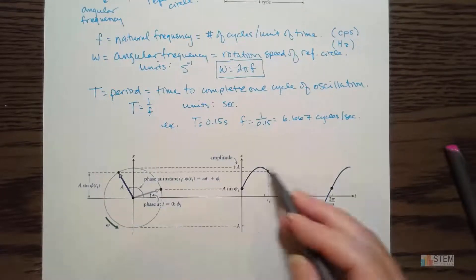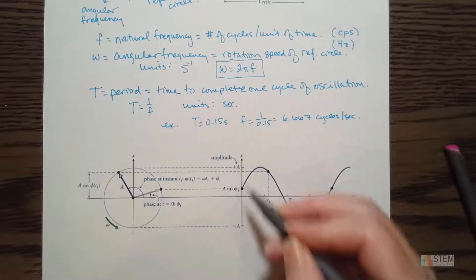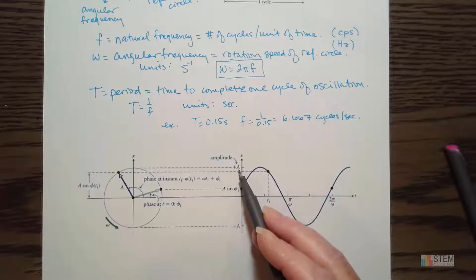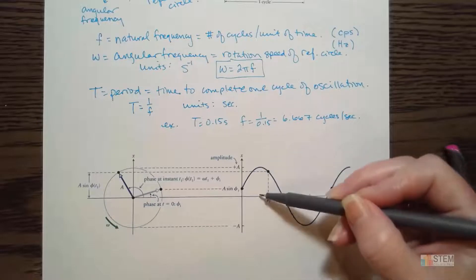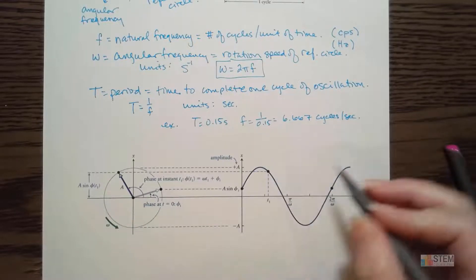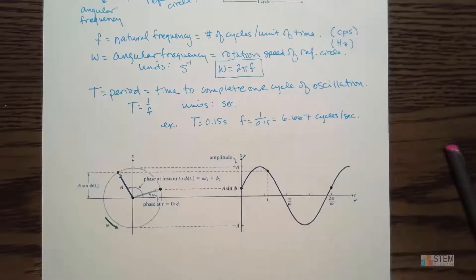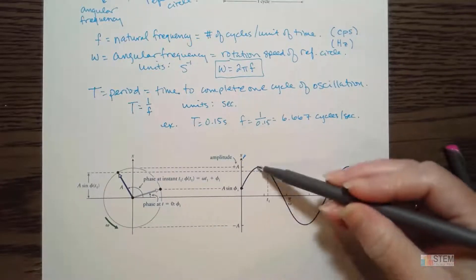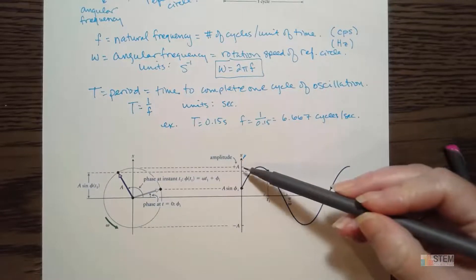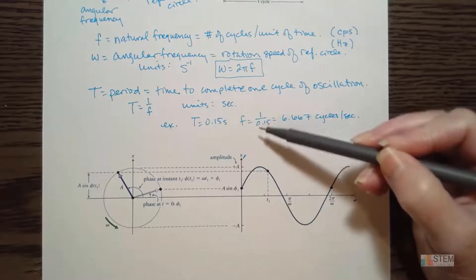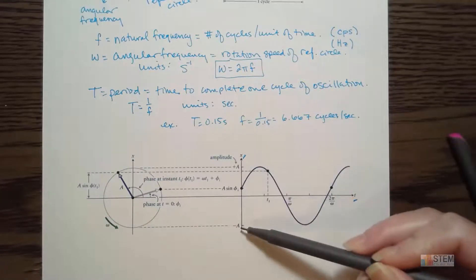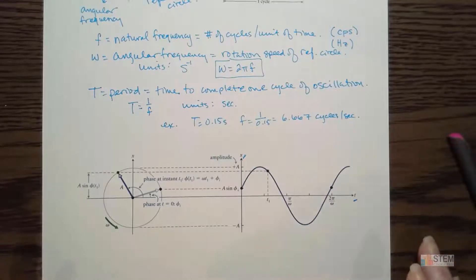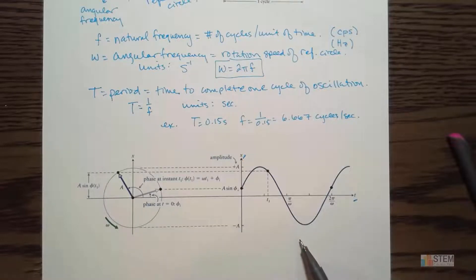We've got the same sinusoid but now we've got A on here. A is your amplitude — it's basically telling you how high up you're going from the horizontal axis. The higher A is, the higher up you go and down more. We've got positive A up here and negative A below. Usually when you're talking about amplitude it's going to be a positive number.